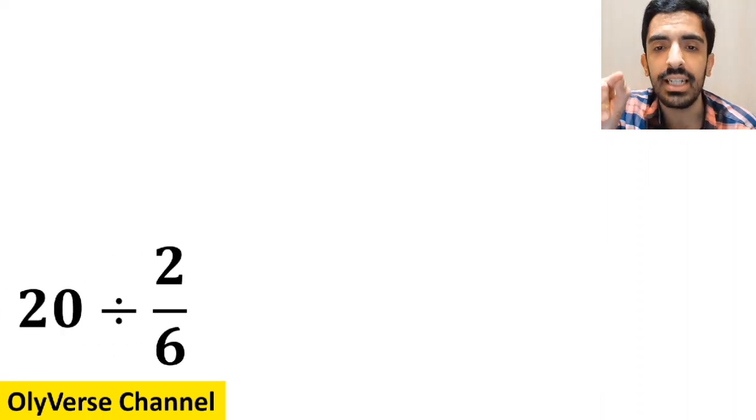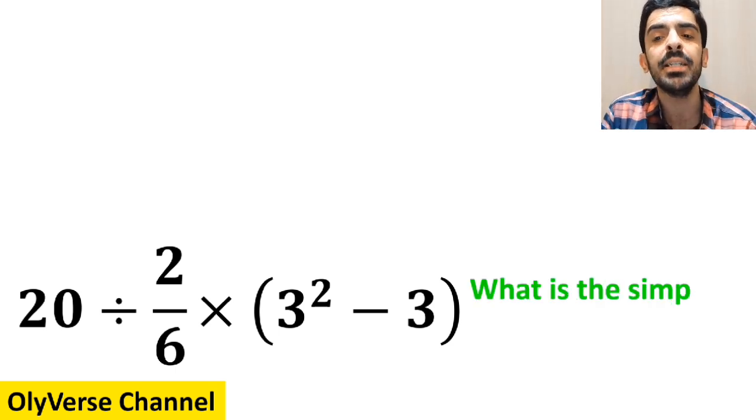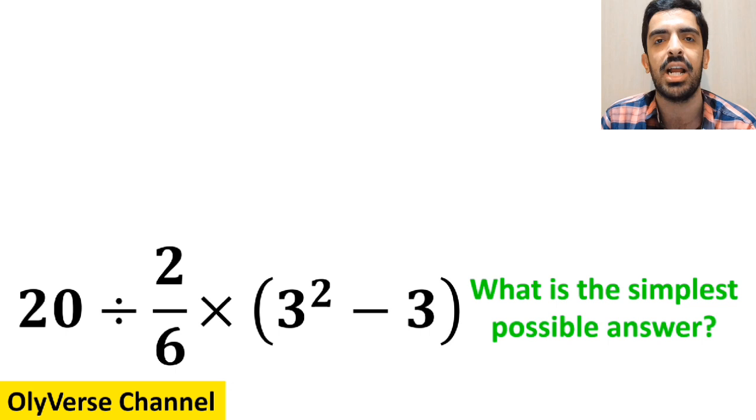If we have the expression 20 divided by 2 over 6 multiplied by open parenthesis 3 to the power of 2 minus 3 close parenthesis, then what is the simplest possible answer to this question?